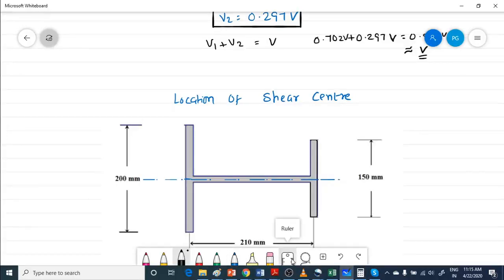You will be able to find that V2 is 0.297 V.